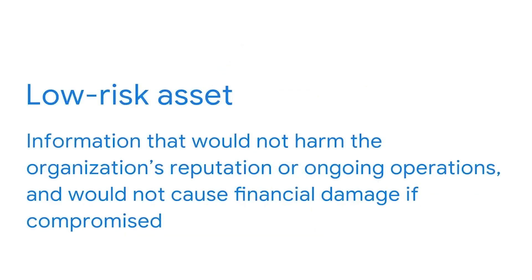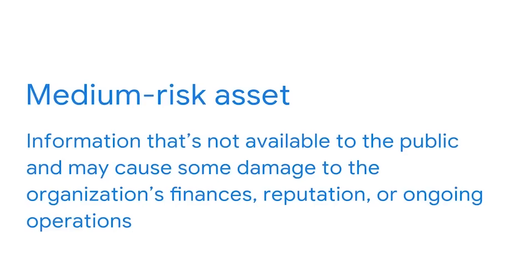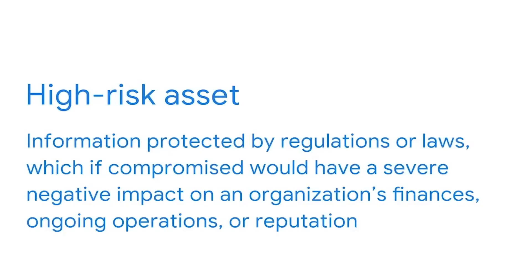A low-risk asset is information that would not harm the organization's reputation or ongoing operations and would not cause financial damage if compromised. This includes public information such as website content or published research data. A medium-risk asset might include information that's not available to the public and may cause some damage to the organization's finances, reputation, or ongoing operations. For example, the early release of a company's quarterly earnings could impact the value of their stock. A high-risk asset is any information protected by regulations or laws, which, if compromised, would have a severe negative impact on an organization's finances, ongoing operations, or reputation. This could include leaked assets with SPII, PII, or intellectual property.